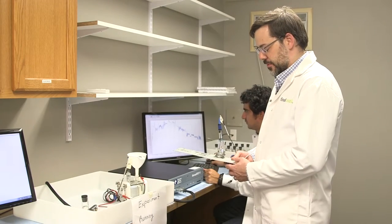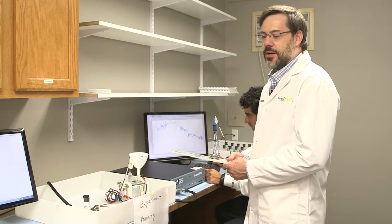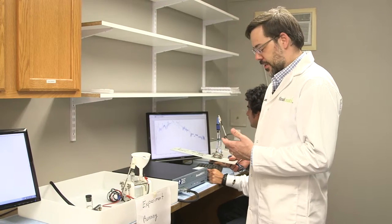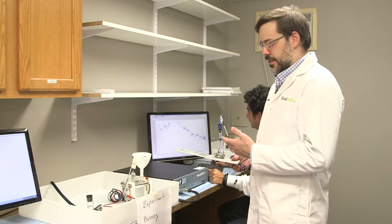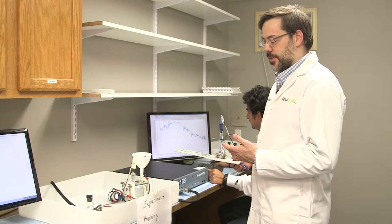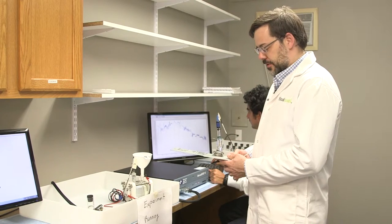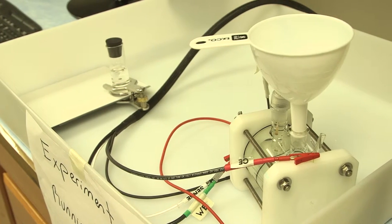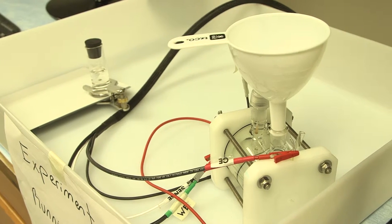Another piece of equipment that's very important to these studies is the cell, which is what we use to expose the material to the electrolyte in order to measure its electrochemical properties. Here we have two examples of cells. This one is called a flat cell and is being used in the current experiment.